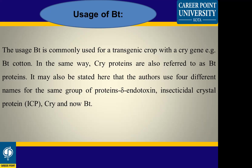With cry gene — for example, Bt cotton — the cry protein is also referred to as Bt protein. It may also be stated that the same group of proteins is referred to by four different names: endotoxin, insecticidal crystal protein, cry protein, and Bt protein.